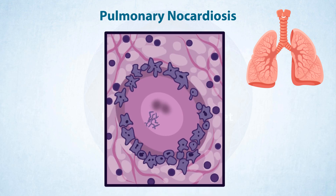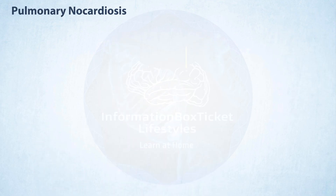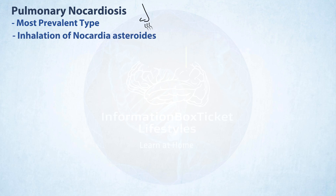In pulmonary nocardiosis, the presence of Nocardia causes an inflammatory response that attracts additional macrophages to the site. As more of them arrive, they surround the bacterium on all sides, forming a granuloma that keeps it from spreading. Caseous necrosis, which literally means cheese-like necrosis, occurs in the middle of the granuloma, where the tissue dies and becomes soft, white, and resembles cheese. The most prevalent kind of nocardiosis is pulmonary nocardiosis, which is often caused by the inhalation of Nocardia asteroides.